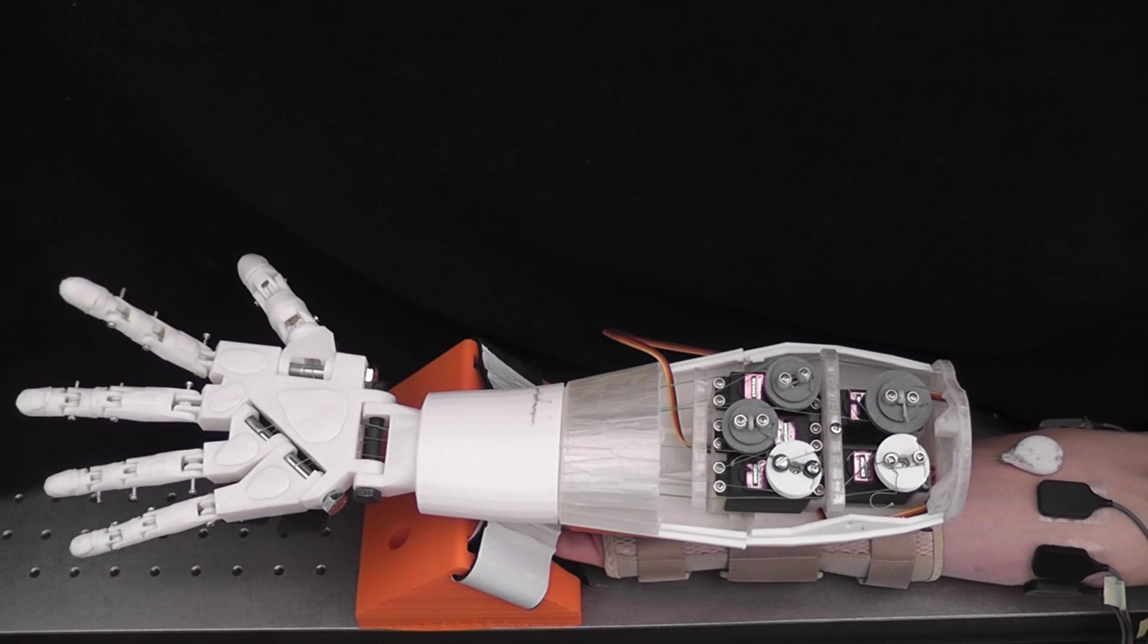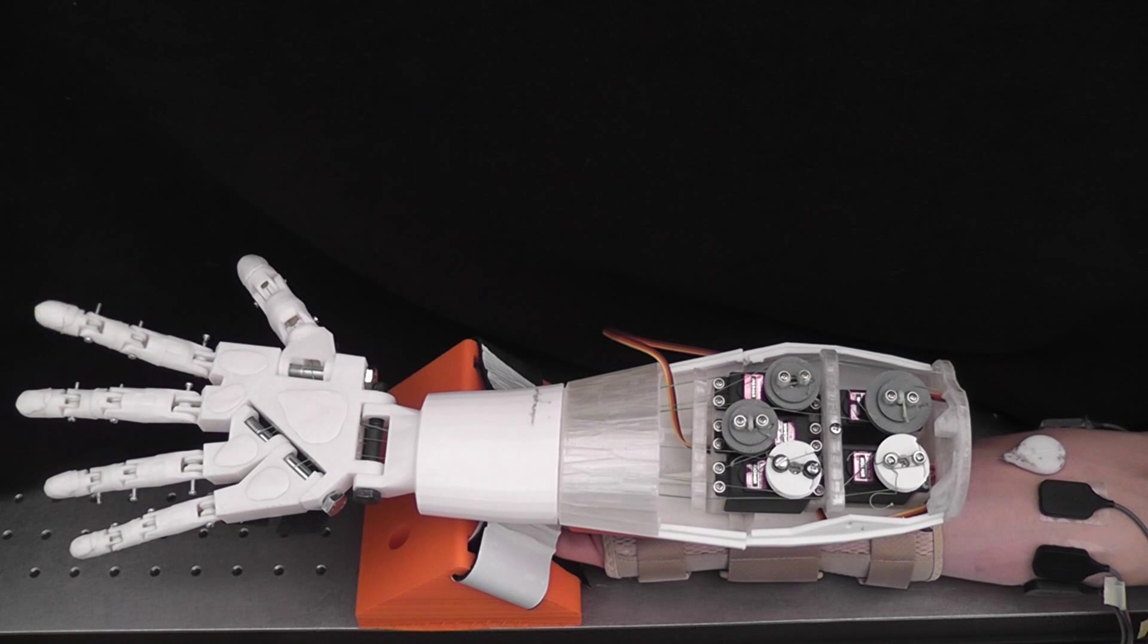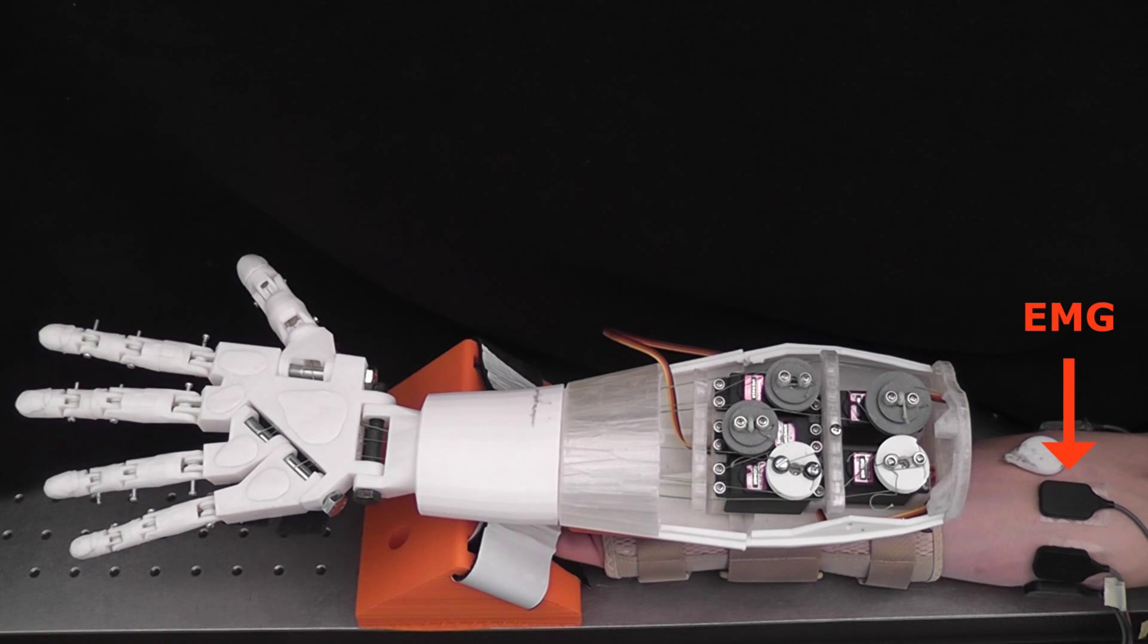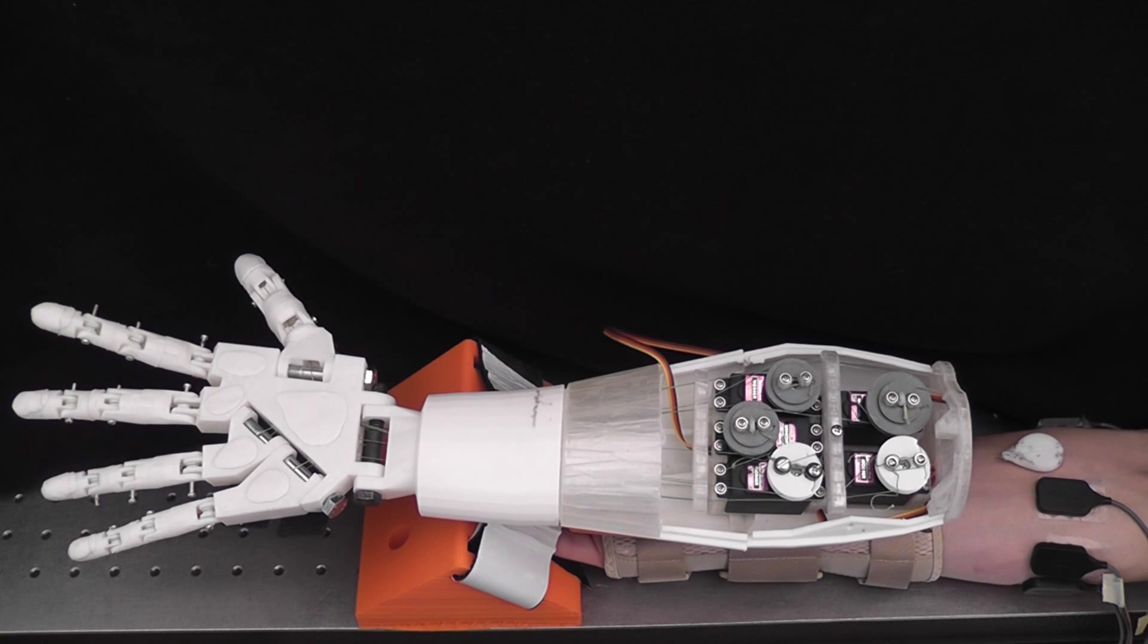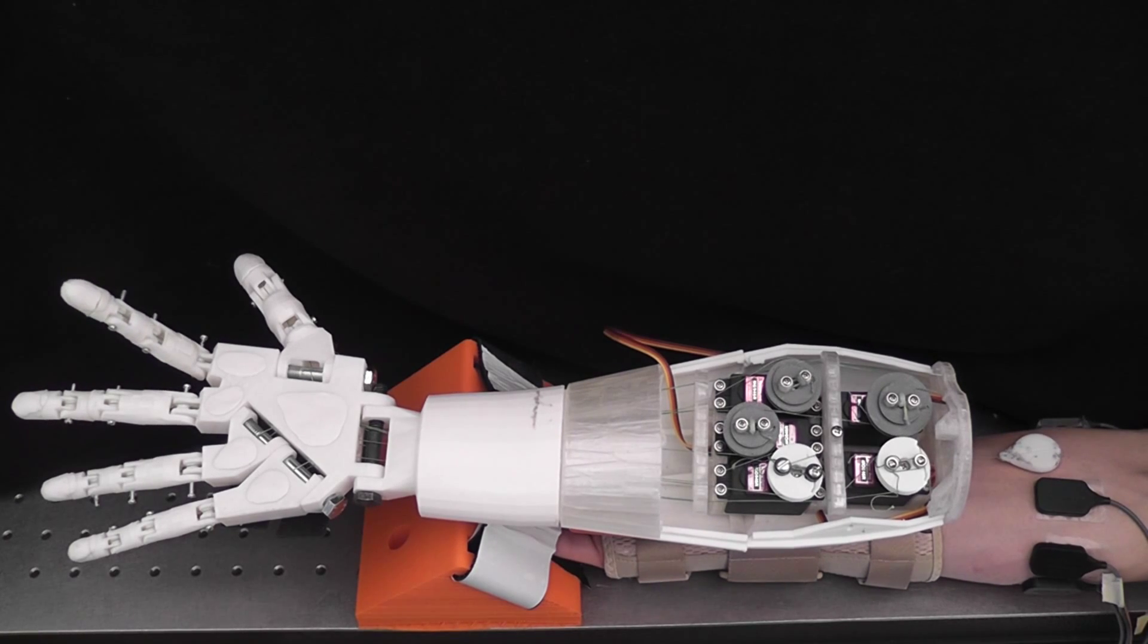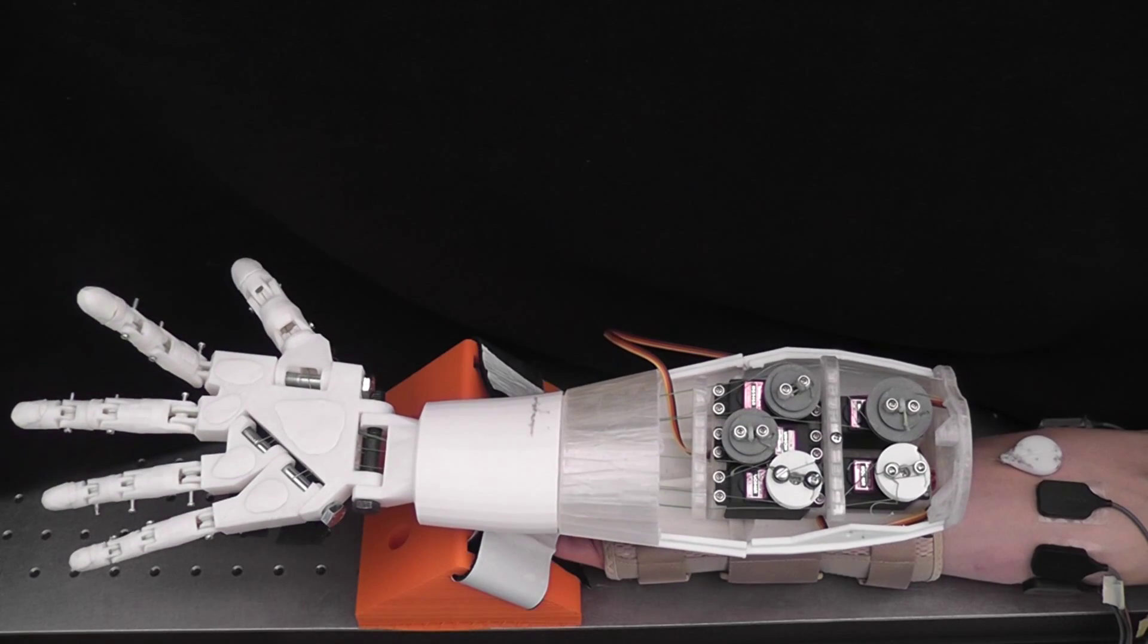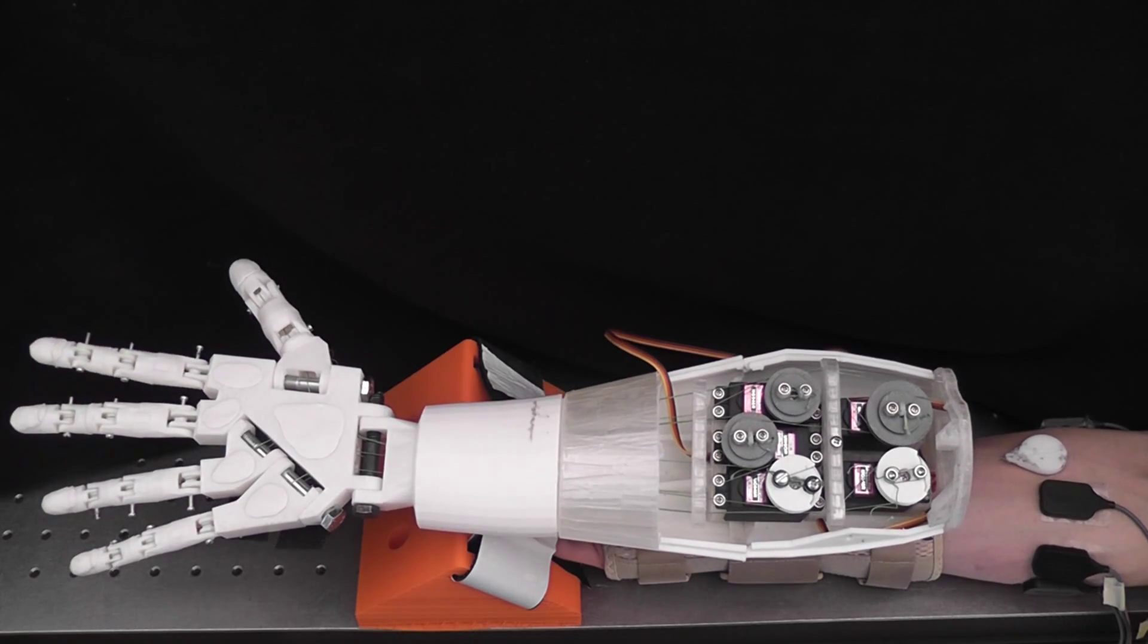Here we see a subject using the skin stretch feedback device. EMG is used to control the position of the finger and the white contact pad provides skin stretch accordingly. The subject's fingers are fixed so that he can only rely on the feeling of skin stretch to determine the angle of the finger.